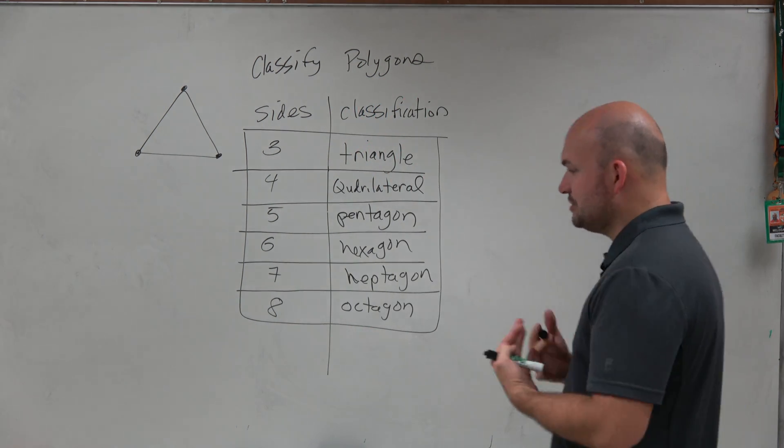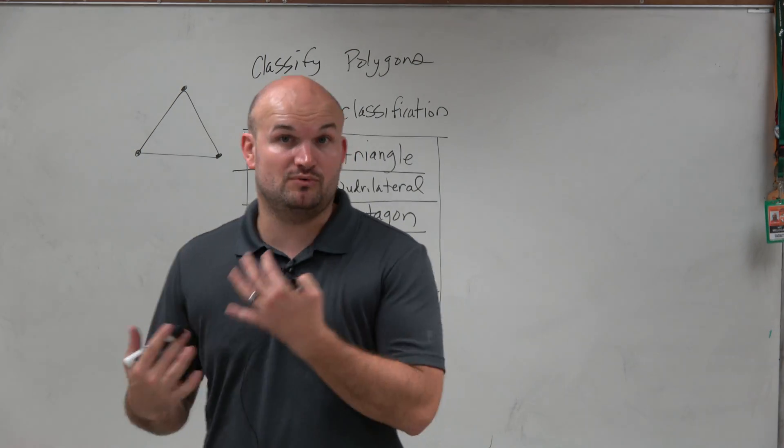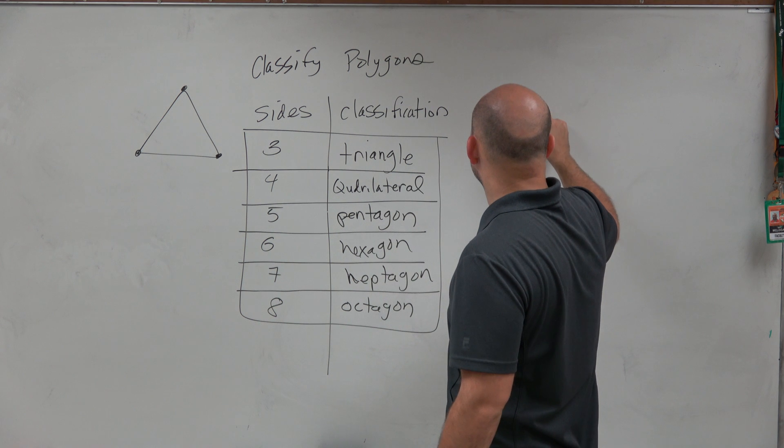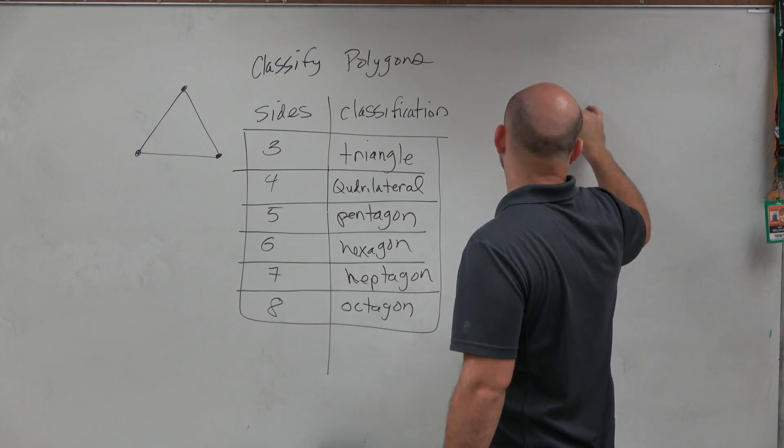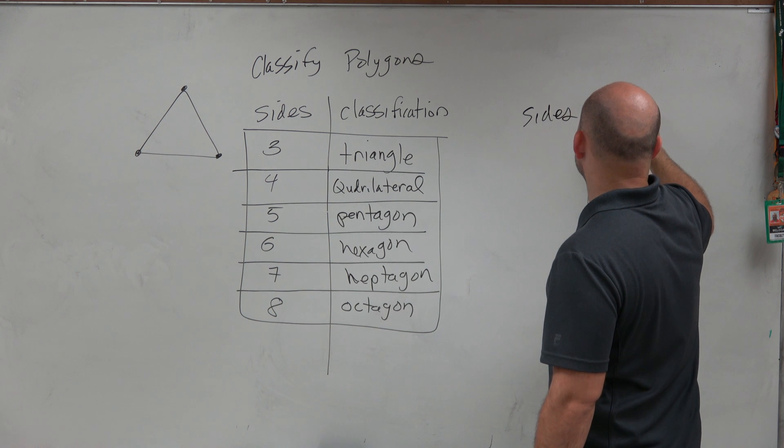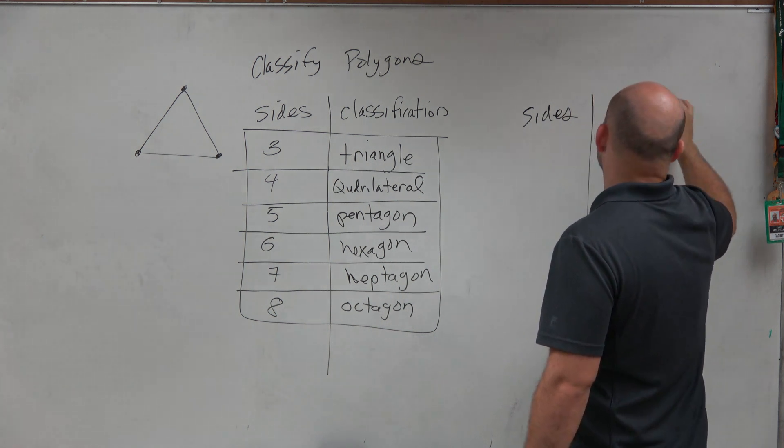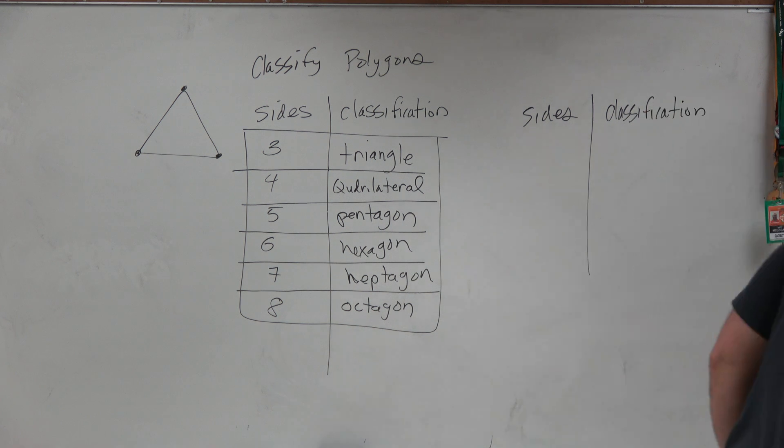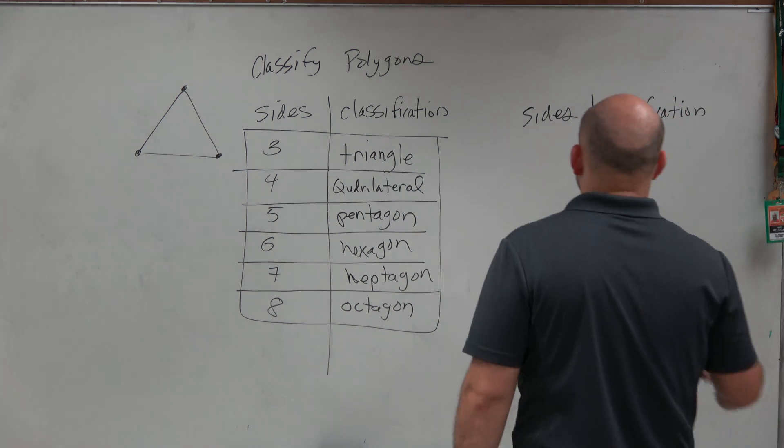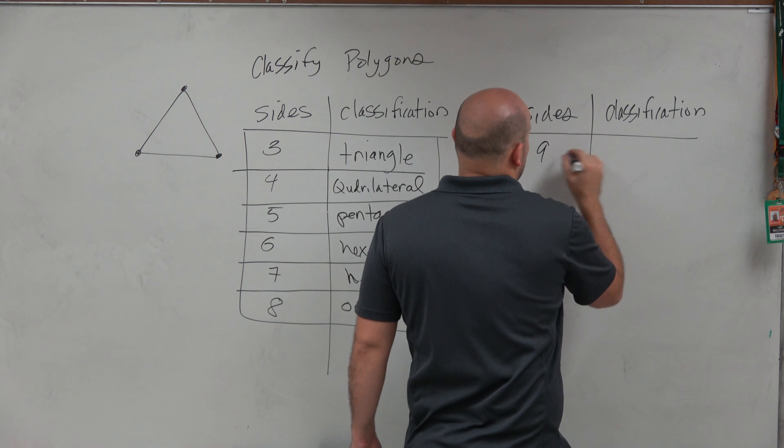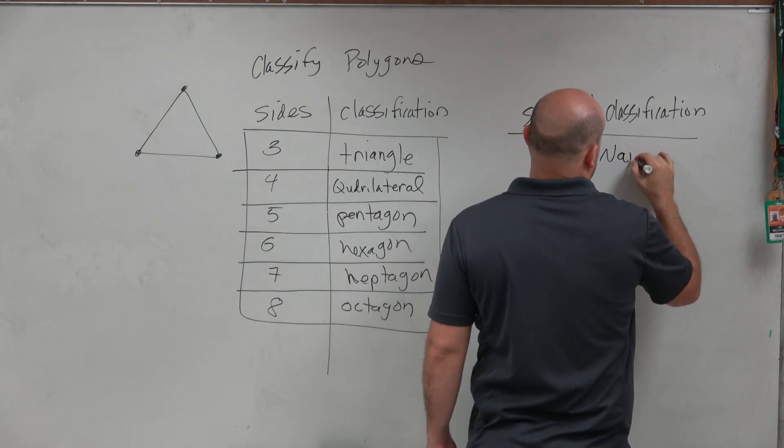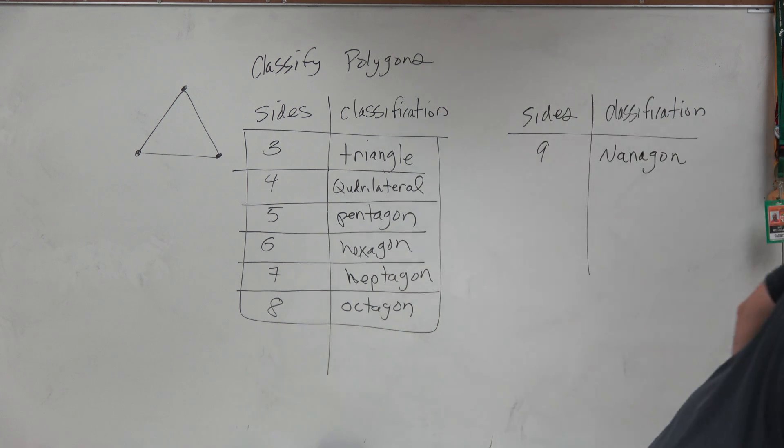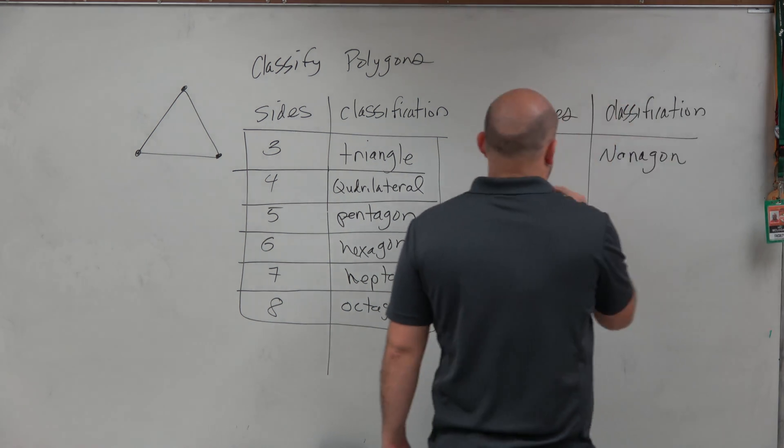Now, some other classification of polygons that we don't use as often, but you will see, is going to be a nonagon for nine sides.